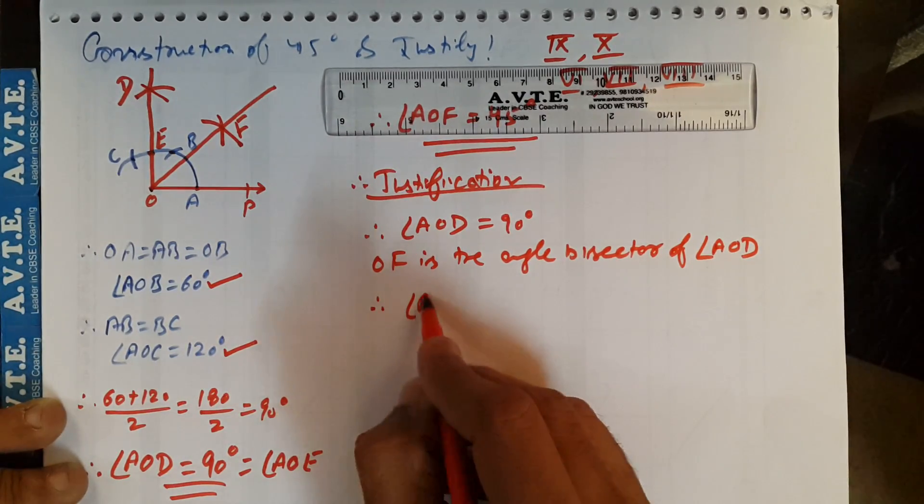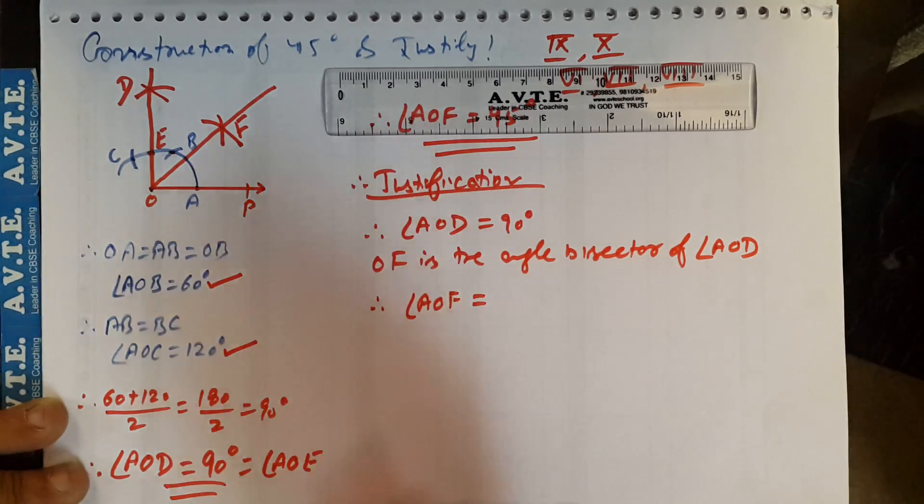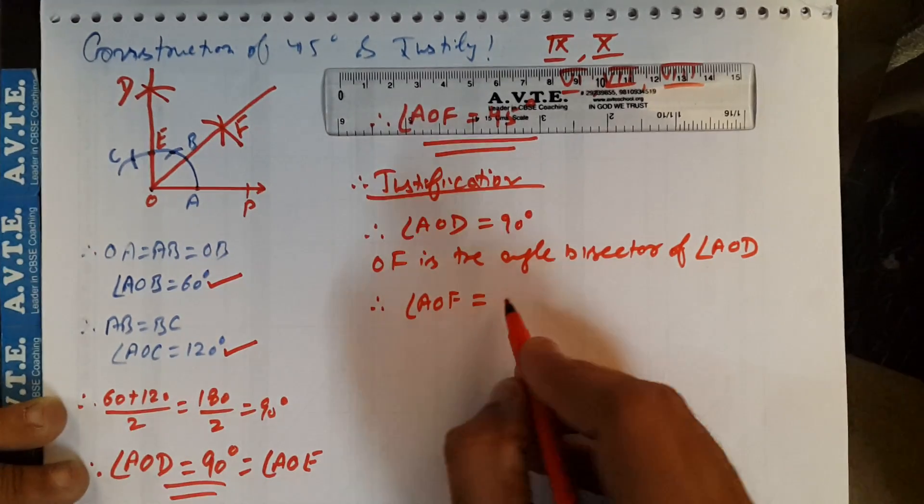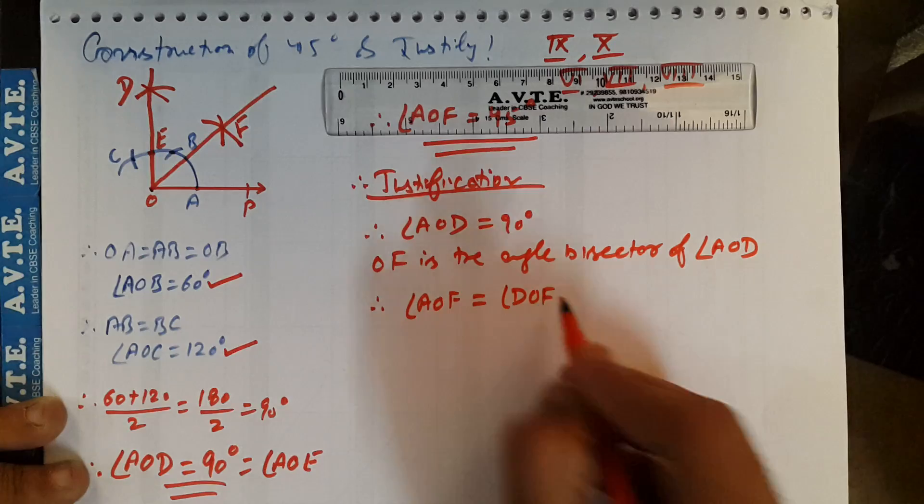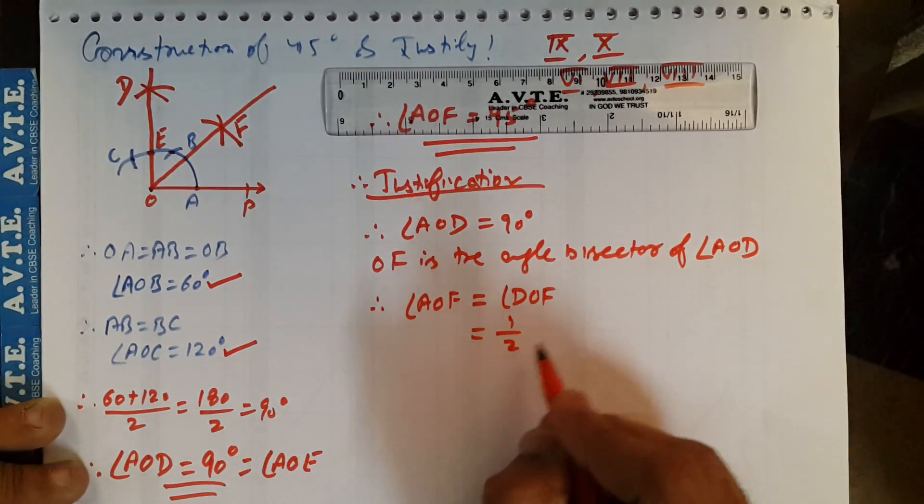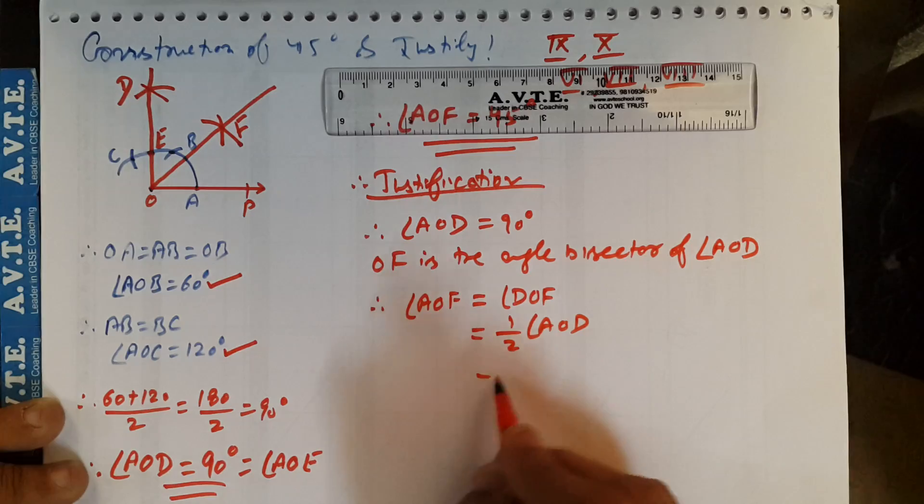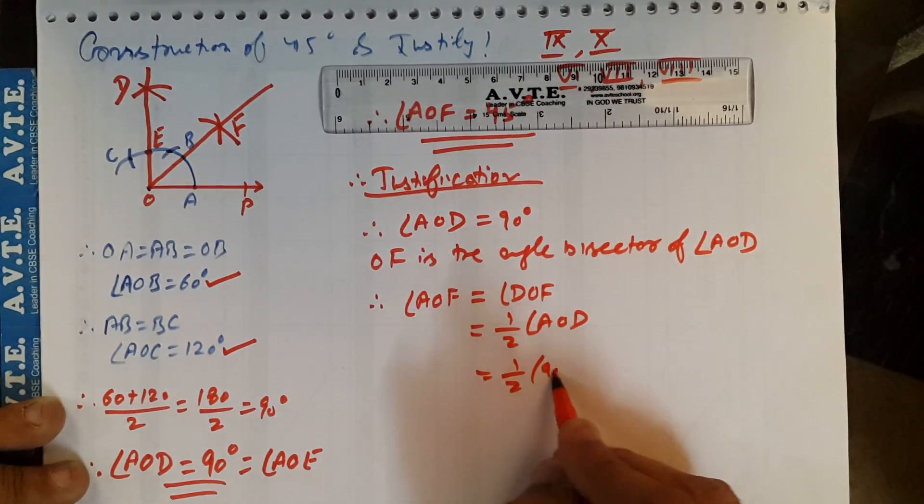So, angle AOF is equal to angle DOF, which is equal to half of angle AOB, which is equal to half of 90 degrees. That means 45 degrees.